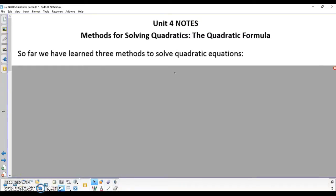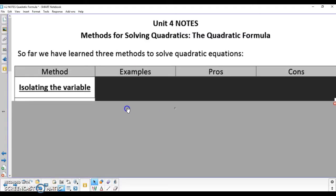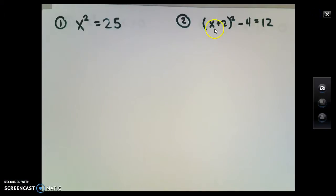Before we start talking about our fourth method and probably most useful method for solving quadratics, I wanted to take a moment in this video to recap what we've learned so far. The first method we learned at the very beginning of the course is isolating the variable. If we look at a couple examples of where that works best, there are going to be two examples like this.